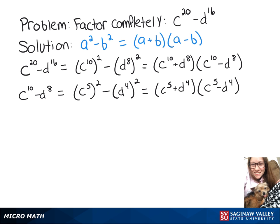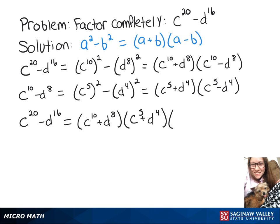So now putting that all together, c to the 20th minus d to the 16th is equal to c to the 10th plus d to the 8th times c to the 5th plus d to the 4th times c to the 5th minus d to the 4th.